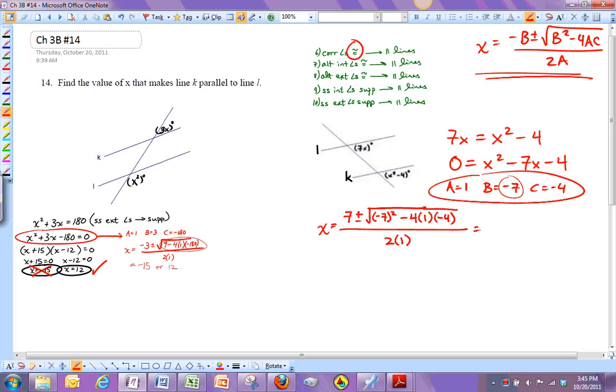And so then to simplify this a little bit, I get 7 plus or minus root 49 plus 16 divided by 2. And this becomes 7 plus or minus root 65 over 2.